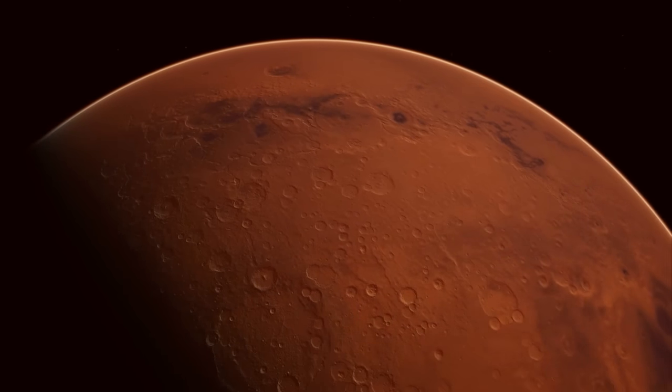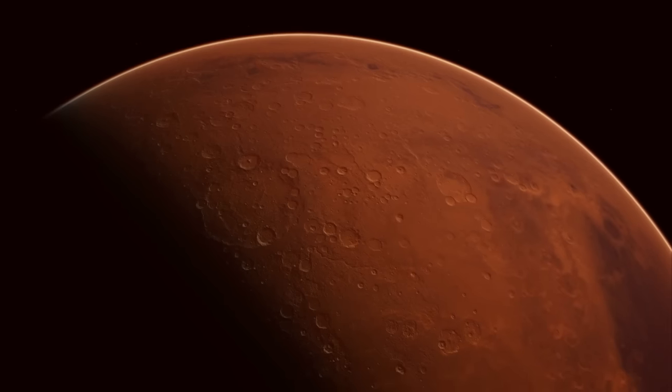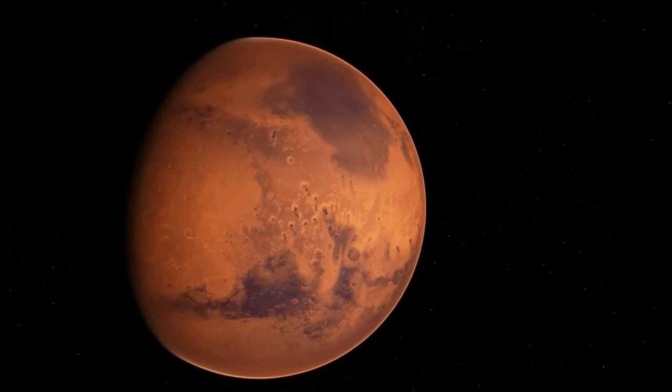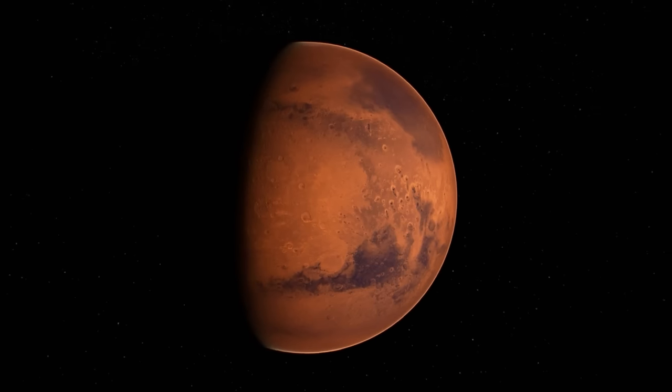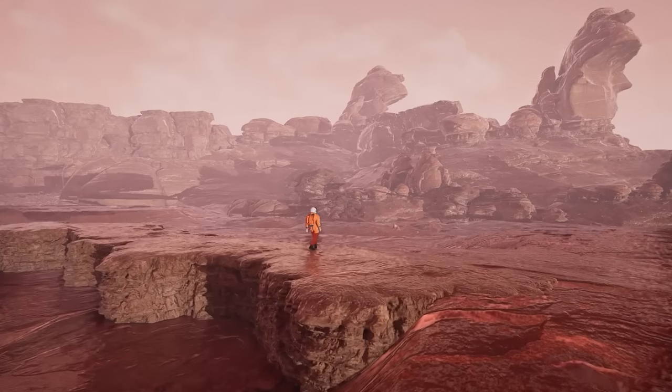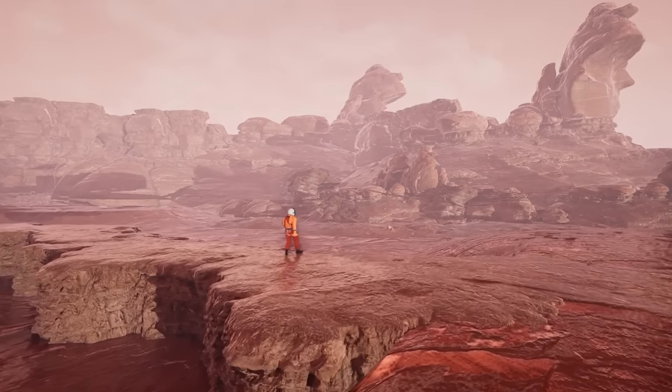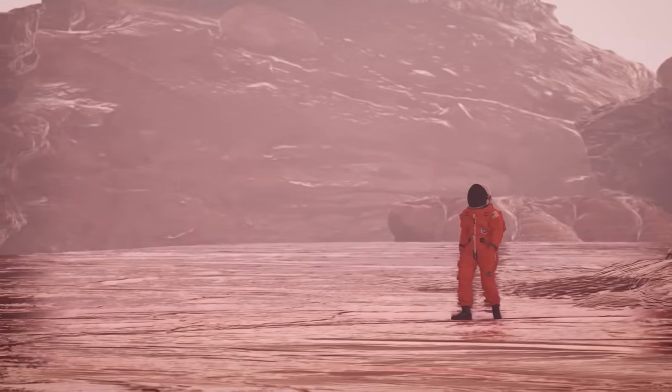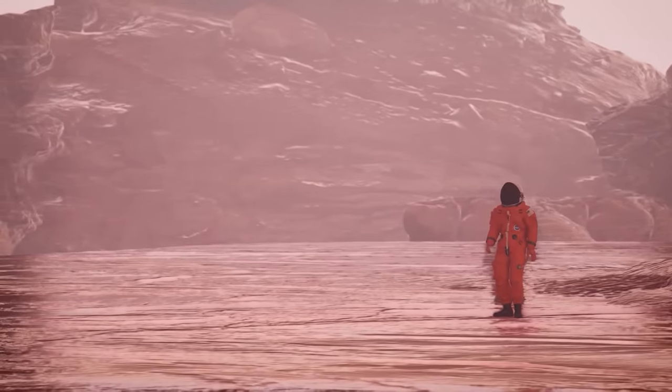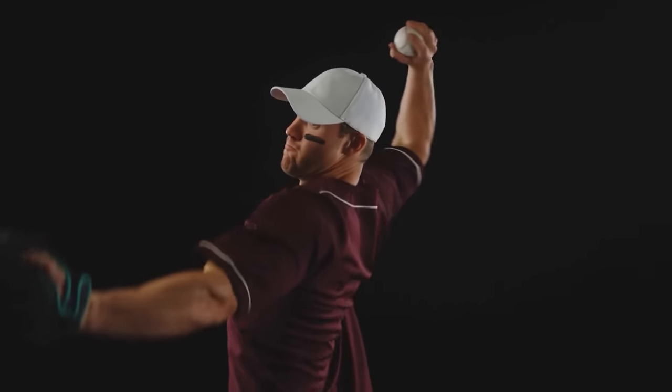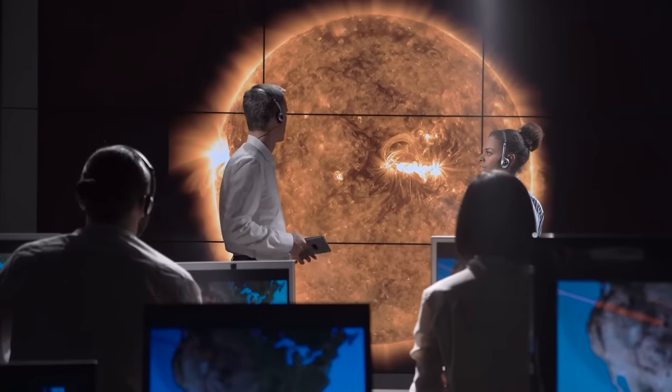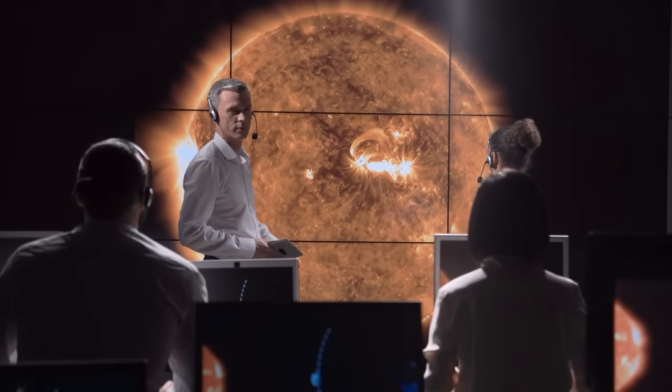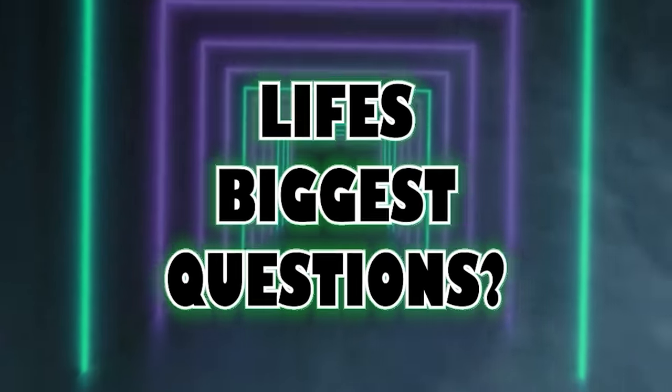Venus, often dubbed Earth's sister planet because of its similar size and proximity to us, has always been somewhat overshadowed by our red neighbor Mars in the quest for extraterrestrial life. However, a recent discovery has cast a surprisingly bright spotlight onto this scorching cloud-covered world. For the longest time, Venus was dismissed as a possible haven for life. With surface temperatures hot enough to melt lead and an atmosphere thick with carbon dioxide and clouds of sulfuric acid, it seemed an unlikely place to find any signs of life. But the universe, as it often does, threw a curveball at us. In 2020, scientists made an announcement that caused quite a stir. They had detected traces of a gas called phosphine in the clouds of Venus.